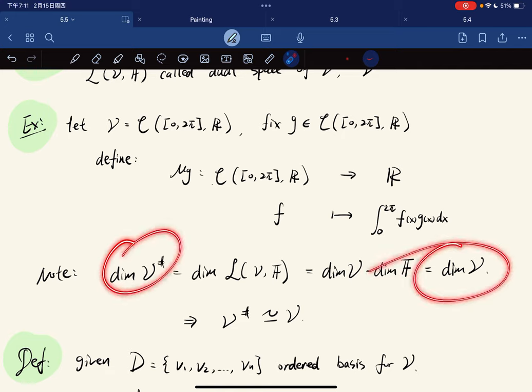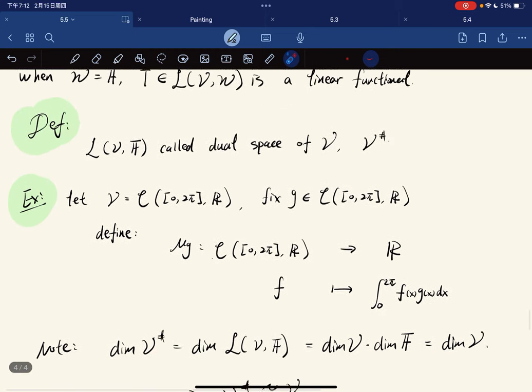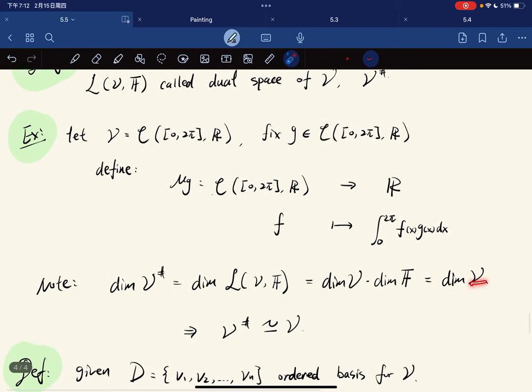They have the same dimension. If they have the same dimension and we assume V is finite dimensional, that means they are isomorphic. Two finite dimensional vector spaces are isomorphic if and only if they have the same dimension.